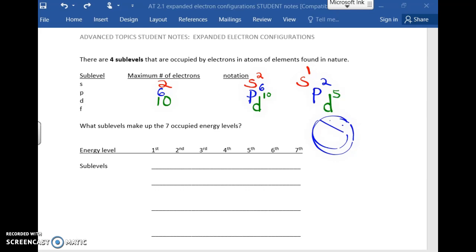On our level, we never get to the f, but just for the sake of completion, the f can hold a maximum of 14 electrons. A nice way of relating the energy levels to the levels in which they're found, to relate the sublevels to the energy levels in which they're found is a little cheer that I do.